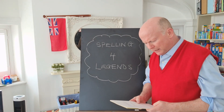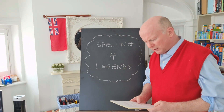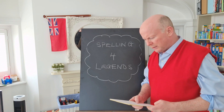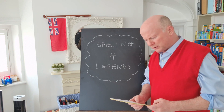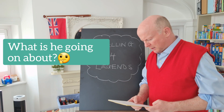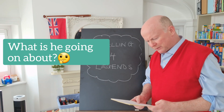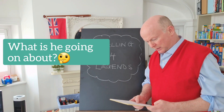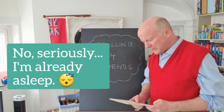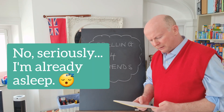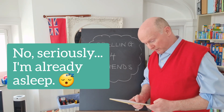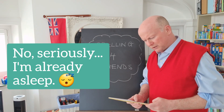Adding the endings -ing, -ed, and -er to verbs where no change is needed to the root word. -ing and -er always add an extra syllable to the word, and -ed sometimes does. The past tense of some verbs may sound as if it ends in -id (extra syllable), or -d or -t (no extra syllable), but all these endings are spelt -ed. If the verb ends in two consonant letters, the same or different, the ending is simply added on.